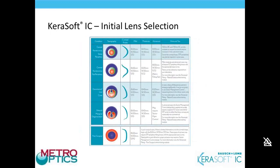The initial lens selection guide shows that for mild categories, you start with the same lens across all categories — the 8.6/14.5 standard lens. We need to remember that just because the corneal curvature is steep, we won't jump to the 7.8 lens in the diagnostic set. We're fitting the whole cornea with the Kerasoft lens, and we want the lens to drape over the cornea without extra tear pooling.